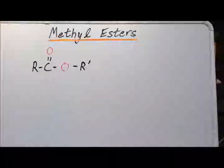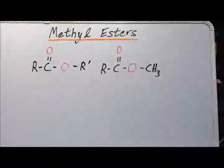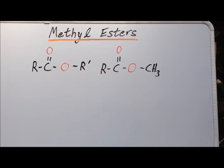R and R prime can either be the same or different alkyl or haloalkyl groups. Methyl esters specifically have the structure shown to the right where again R can be any alkyl or haloalkyl group, or even a hydrogen atom.